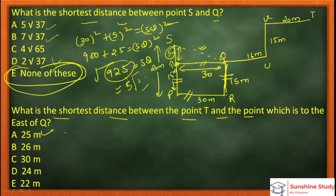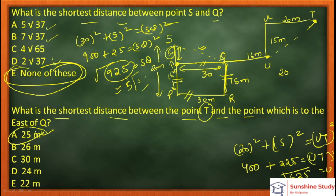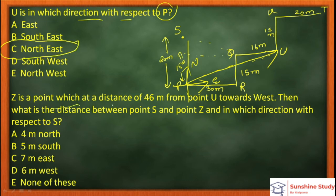Next: what is the shortest distance between U (East of Q) and T? Using Pythagorean theorem: 20² + 15² = 400 + 225 = 625. Square root of 625 is 25 meters. So option A is correct. Next: U is in which direction with respect to P? North is up, East is this side, and U falls between North and East — so the answer is Northeast.